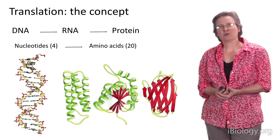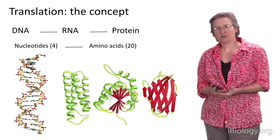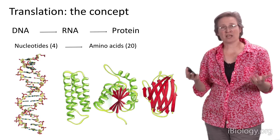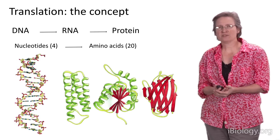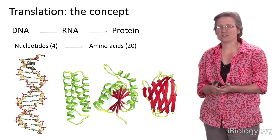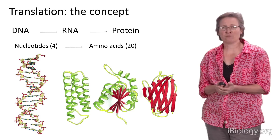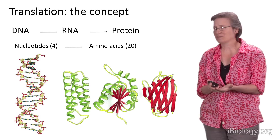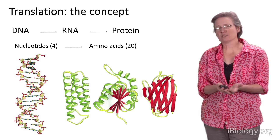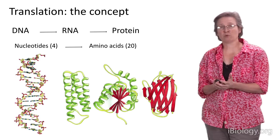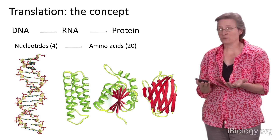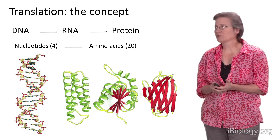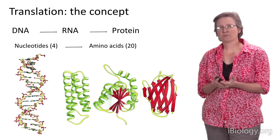Protein synthesis is also known as translation, and as many of you are familiar with, this is the final step in the central dogma — the process by which genetic information is transformed into the proteins in the cell that perform most of the cell's functions. The genetic information is found in the form of DNA, that double-stranded molecule built of nucleotide building blocks, and that DNA must be transcribed into RNA, which is ultimately translated into protein, a very different polymer composed of amino acids.